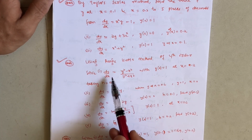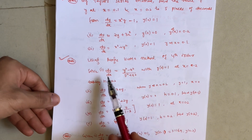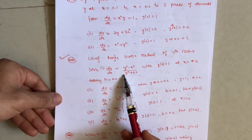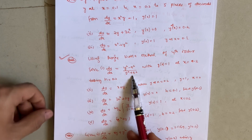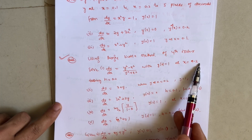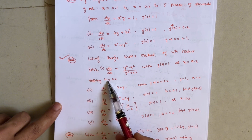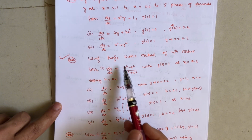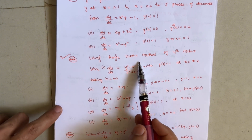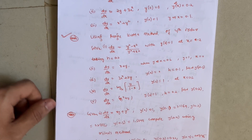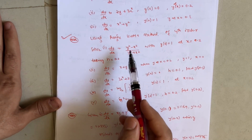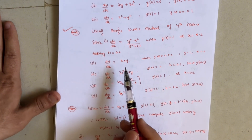Next we have the Runge-Kutta method of fourth order. Solve dy/dx = (y² − x²)/(y² + x²), y(0) = 1, at x = 0.2 taking step size h = 0.2. I have also uploaded a Runge-Kutta method video for 18 scheme students — refer to that to understand the concept, and you will then be able to solve a variety of Runge-Kutta problems.